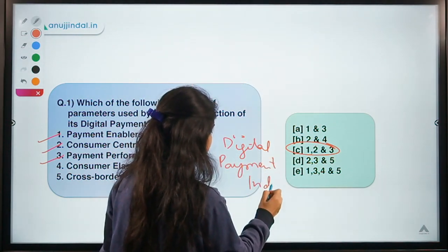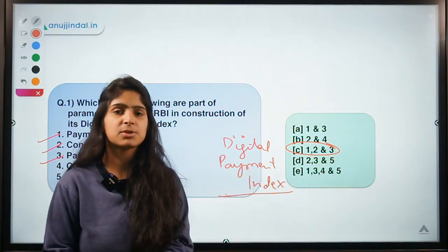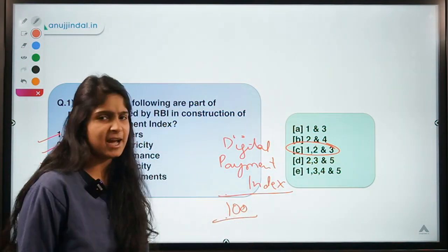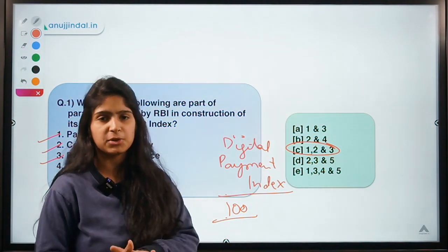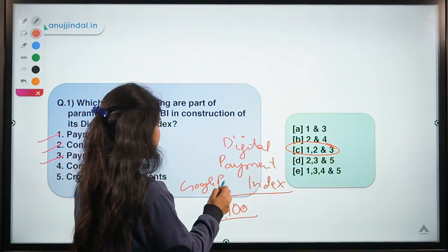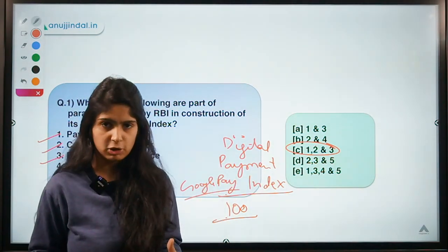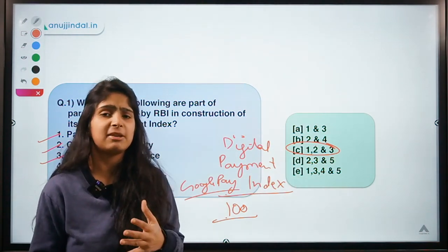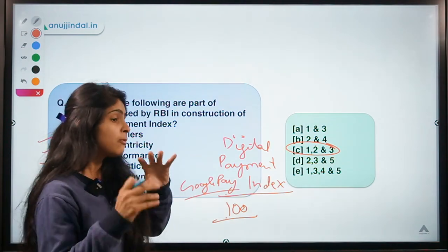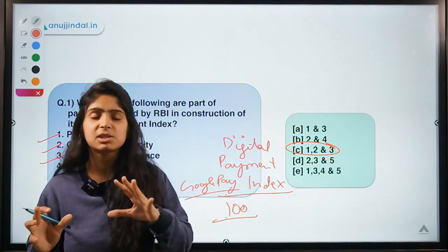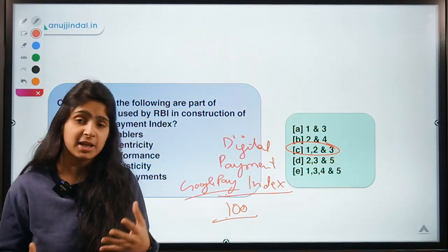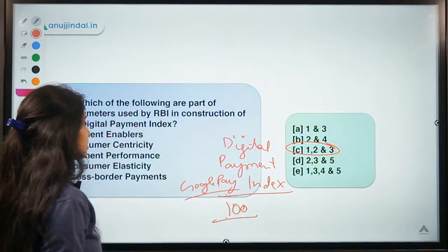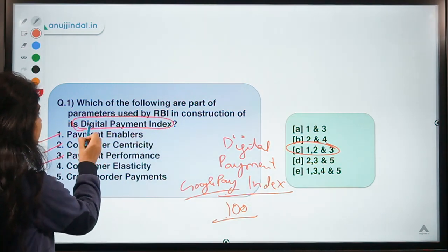First of all, we have to understand what is the meaning of this digital payment index. Nowadays it has become really easy to make a payment. Yesterday after my work I was going home and thought of having a chocolate — a nearly 100 rupee payment — and I just used Google Pay from my phone. We have become accustomed to the technology, especially people living in metro cities like Delhi and Mumbai. For measuring the level of penetration of technology and how many people are using digital payments in the country, RBI has come up with this digital payment index.